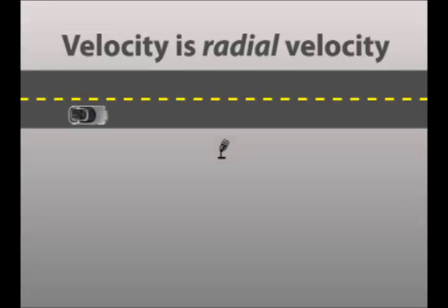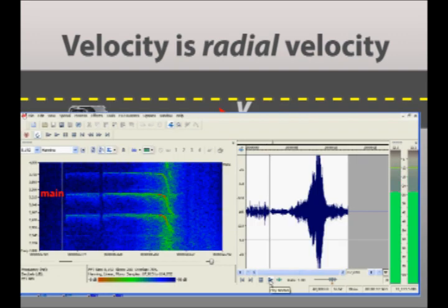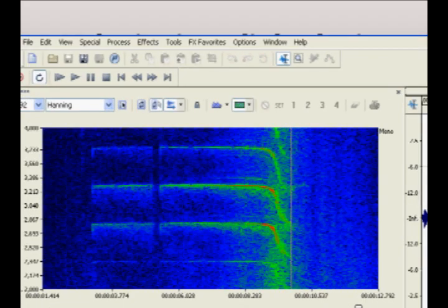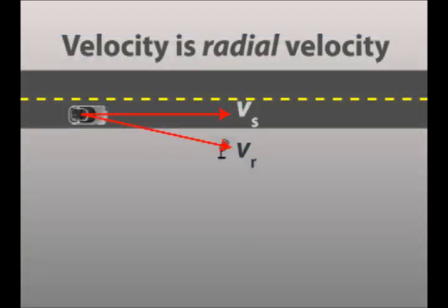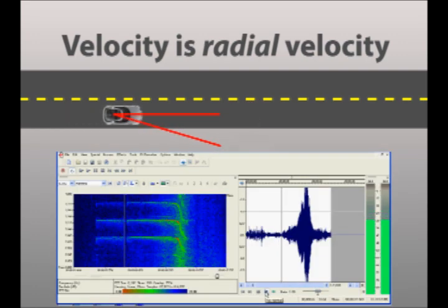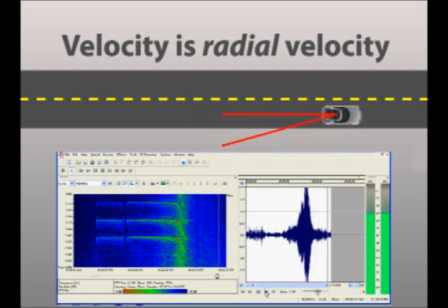The final thing to realize is that the car is not coming directly at the microphone, but at a tangent, and this affects the shape of the Doppler shift. If the car were coming directly at the microphone, the Doppler-shifted frequency would be constant — but it's not; it shifts smoothly as the car goes by. The relevant speed is the speed of the source with respect to the microphone along a straight line between them. When the car's path is tangential, this speed is the product of the car's forward velocity and the cosine of the angle between the two directions. The result is a sinusoidal shift in frequency.